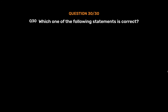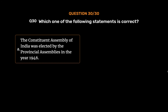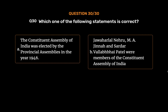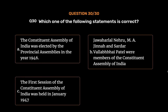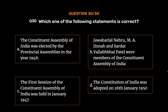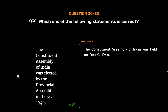Question No. 30. Which one of the following statements is correct? Option A: The Constituent Assembly of India was elected by the Provincial Assemblies in the year 1946. Option B: Jawaharlal Nehru, M.A. Jinnah and Sardar Vallabh Bhai Patel were members of the Constituent Assembly of India. Option C: The first session of the Constituent Assembly of India was held in January 1947. Option D: The Constitution of India was adopted on 26th January 1950. The correct answer is Option A. The Constituent Assembly of India was elected by the Provincial Assemblies in the year 1946. The first session of the Constituent Assembly of India was held on December 9, 1946.